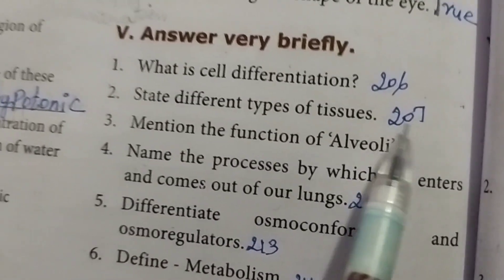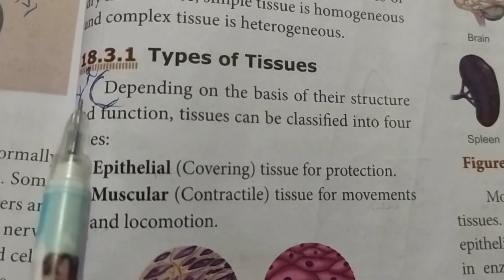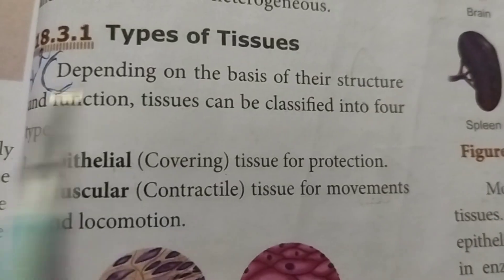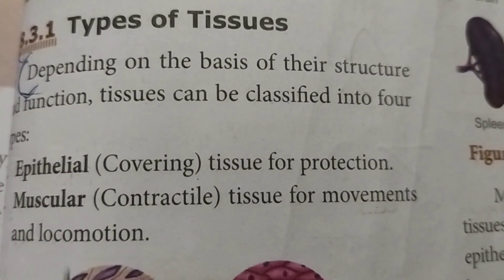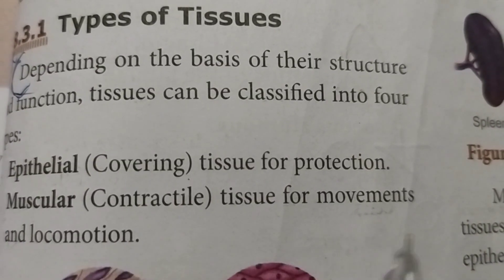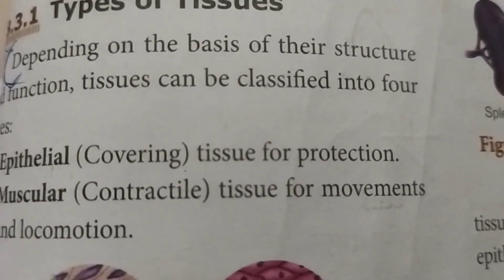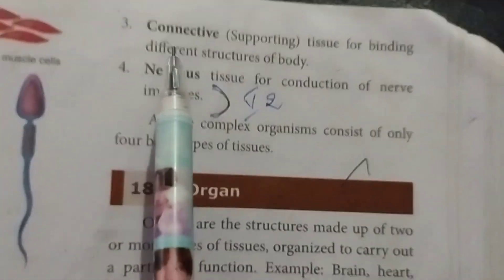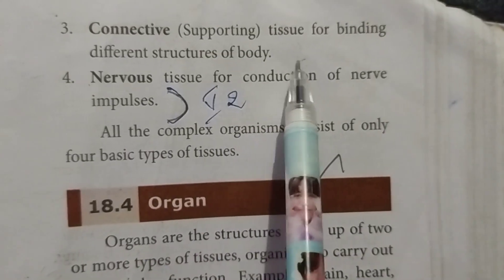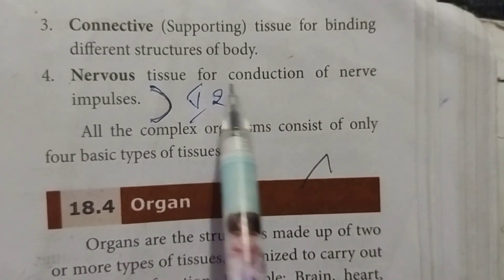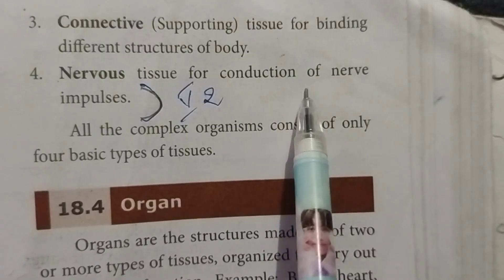Second: state the different types of tissues. Depending on their structure and function, tissues can be classified into four types: epithelial tissue — covering tissue for protection; muscular tissue — contractile tissue for movements and locomotion; connective tissue — supporting tissue for binding different structures of the body; nervous tissue — for conduction of nerve impulses.